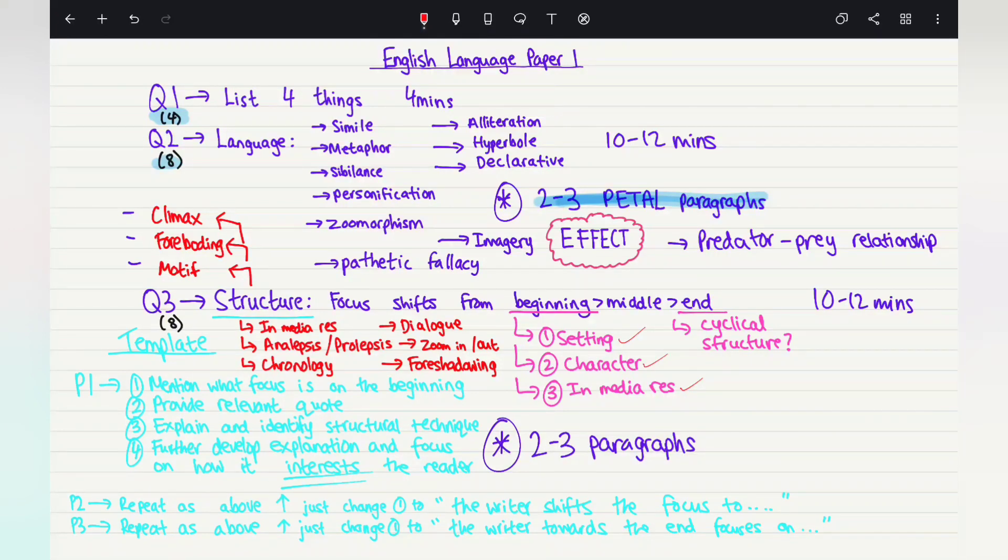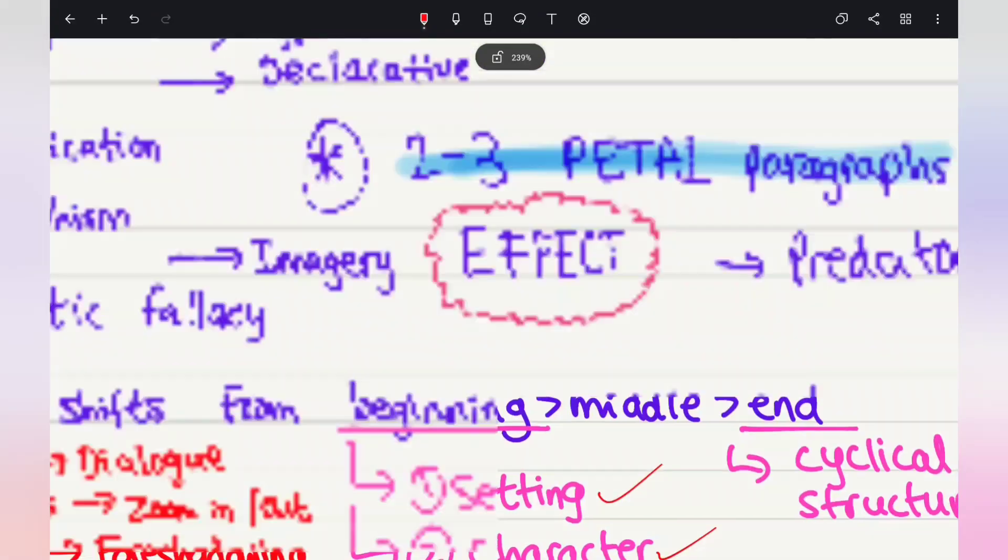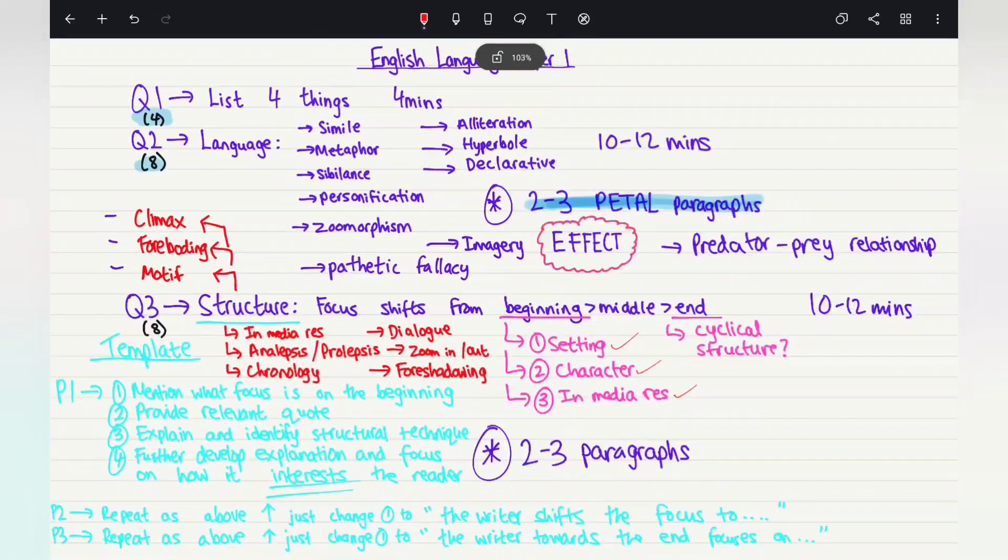So it is 8 marks. In terms of timing you should spend around 10 to 12 minutes on the question, but importantly to score the top marks you need to explore the effect, as you can see I've circled it here. What is the effect of language and importantly what effect does it have on the reader? That's how you would score the top marks. A lot of students are correctly identifying the language techniques, the adverbs, the adjectives, the metaphor, the simile, but they fail to elaborate on the effect of language. So if you want to score top marks, my top tip for you all is explore the effect of language.